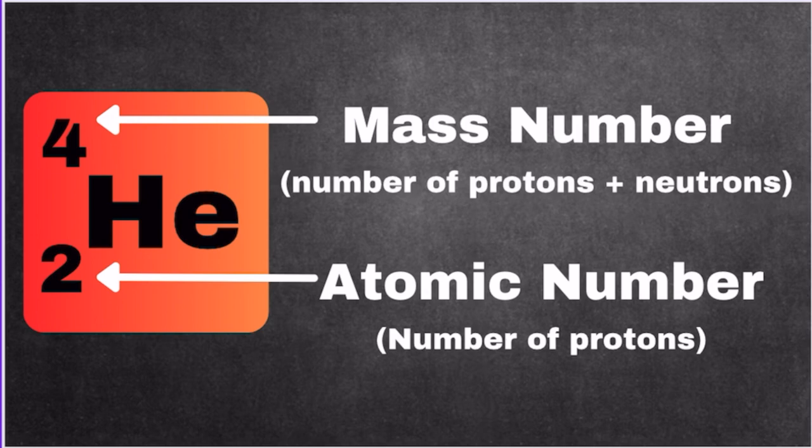Before moving on to the examples, we need to revise nuclide symbols. The number on the bottom is the atomic number, which is the number of protons. And the number on top, which is 4, is the mass number, which is basically the atomic number, number of protons, plus the number of neutrons in the atom.